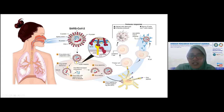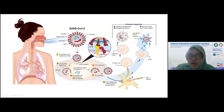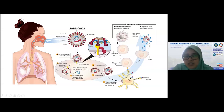APC ini nanti akan membangkitkan T helper, lalu T citotoxic, dan lalu dia akan bekerja mengeluarkan antibody yang sesuai dari si virus ini. Nantinya akan ada sitokin. Sitokin itu perangkat imun di dalam tubuh kita yang akan keluar. Yang kita harapkan kalau ada vaksinasi, meskipun kita tidak terinfeksi, ada sesuatu yang memicu imun respon kita untuk bisa membuat antibody dari si virus ini. Itulah tujuannya dari vaksinasi.